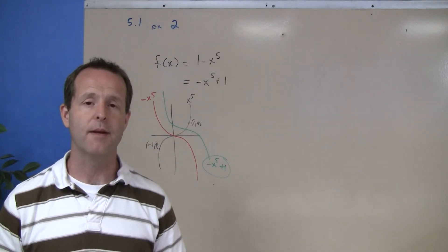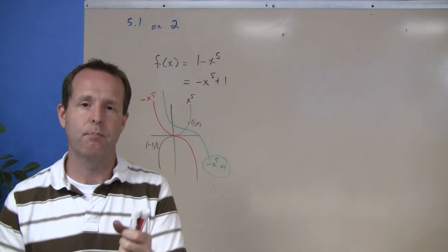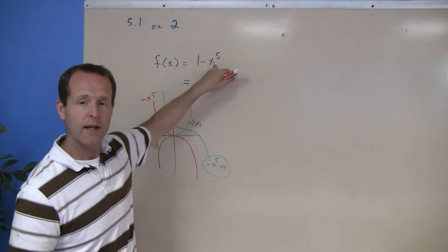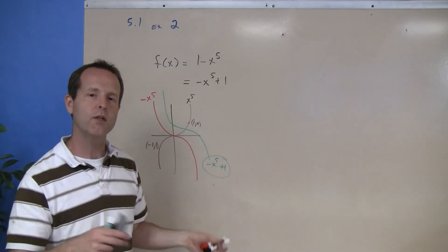And the rule of thumb is basically determine what is its basic function. Basic function is x to the fifth. And then from there work your way out. What do the other numbers do?